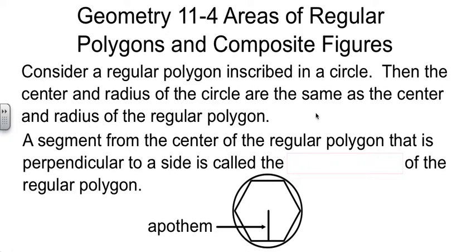When we're dealing with regular polygons, think about a regular polygon where all the sides are equal and all the angles are equal, inscribed in a circle. The circle goes through all the vertices, like you see here. I picked a hexagon just because it was easiest to put together.